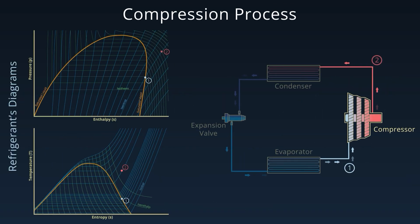From point 1 to 2, the refrigerant enters the compressor as a low pressure, low temperature saturated vapor. The compressor performs isentropic compression, raising the pressure and temperature significantly. At point 2, the refrigerant is a high pressure, high temperature superheated vapor.